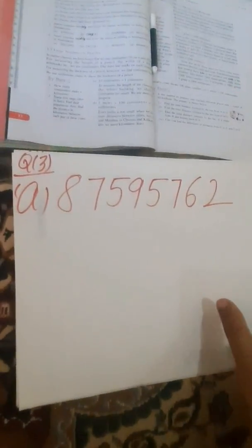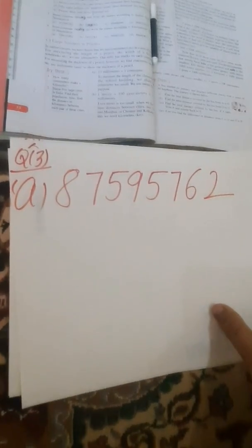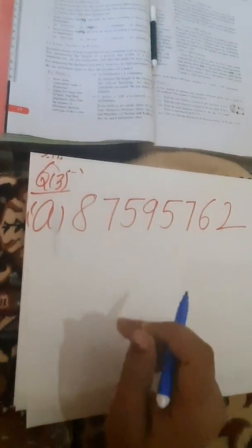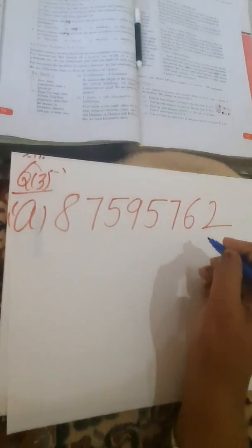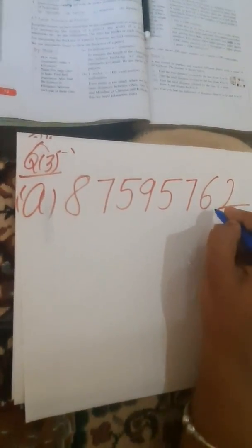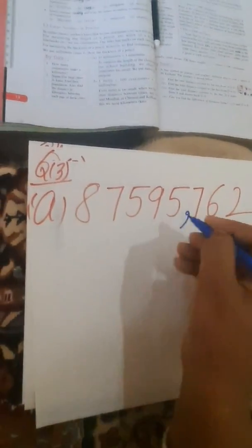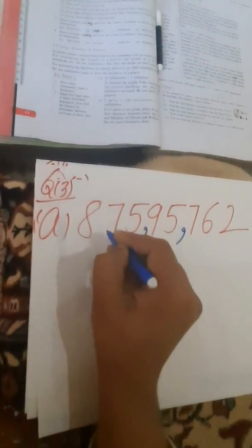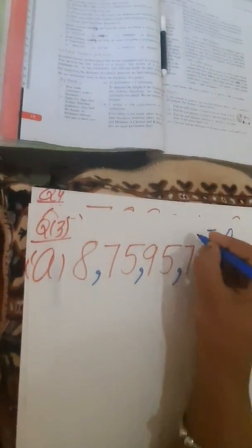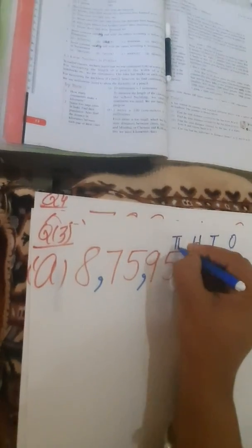Now question number 3: insert commas suitably and write names according to the Indian system of numeration. First step is to insert commas, then write in words. In the Indian system, insert after 3 digits from the right, then skip 2 digits, insert comma, skip 2 digits, insert comma. The digit positions are: ones, tens, hundreds, thousands, ten thousands, lakh, ten lakh, crore.